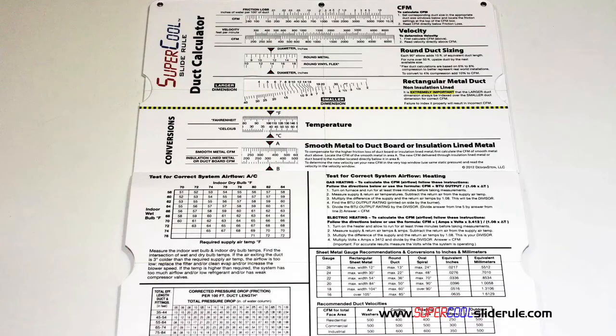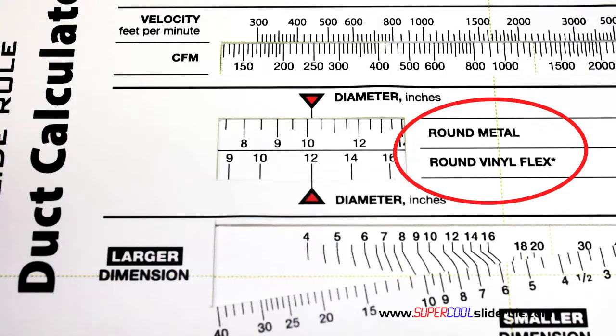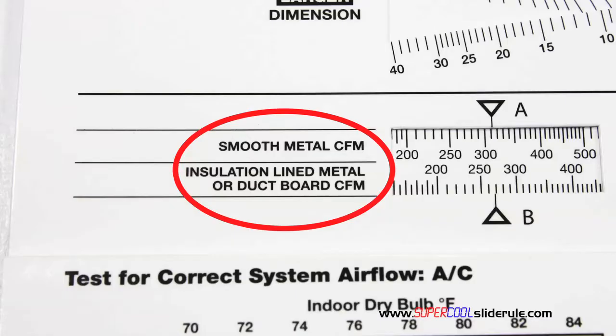Inside is packed with even more information. It performs sizing of both metal and flexible duct. It has the only direct reading conversion from smooth metal to insulation lined metal we've ever seen. The majority of technicians have never been taught that if the insulation is on the inside of the ductwork, you cannot size it with a regular duct calculator.